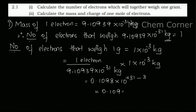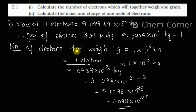So 0.1098×10⁻³¹⁺²⁸ becomes 0.1098×10²⁸, which equals 1.098×10²⁷. So this many number of electrons will be present in one gram. This is how you calculate the very first question. The next question is: calculate the mass and charge of one mole of electrons.